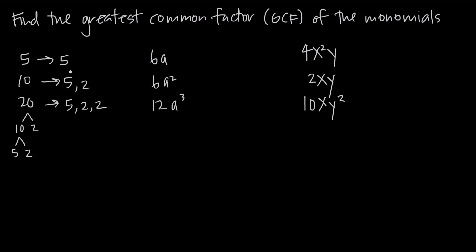With our monomials broken down into their prime factors, we're looking for the factors that are common to all three of our monomials. So if we start at the top and look at this first factor of five — is five in our other two monomial numbers? Yes it is. We have a factor of five here and a factor of five here. So because this factor of five exists in the breakdown of all three, we can include it in our greatest common factor.